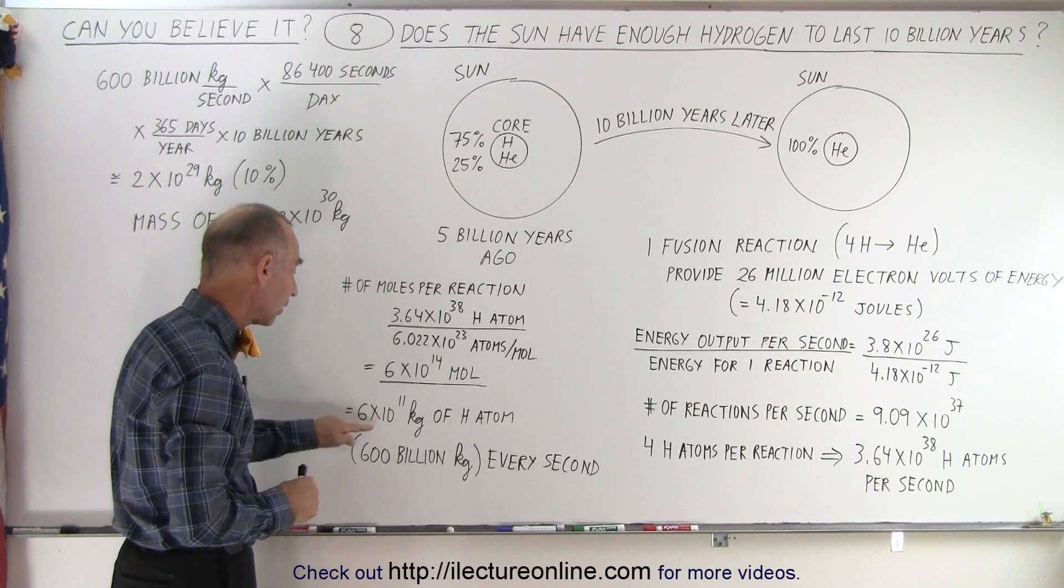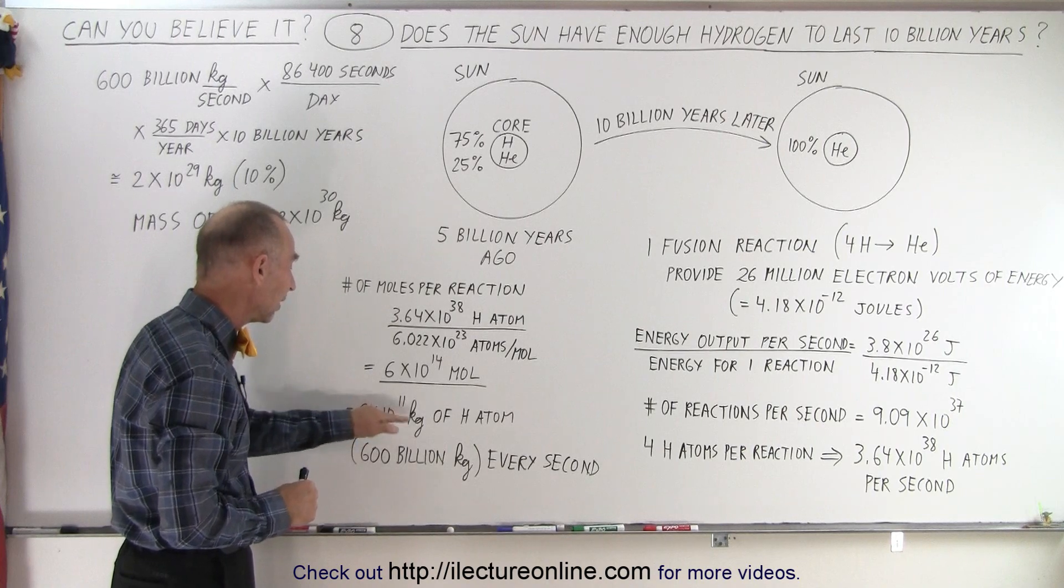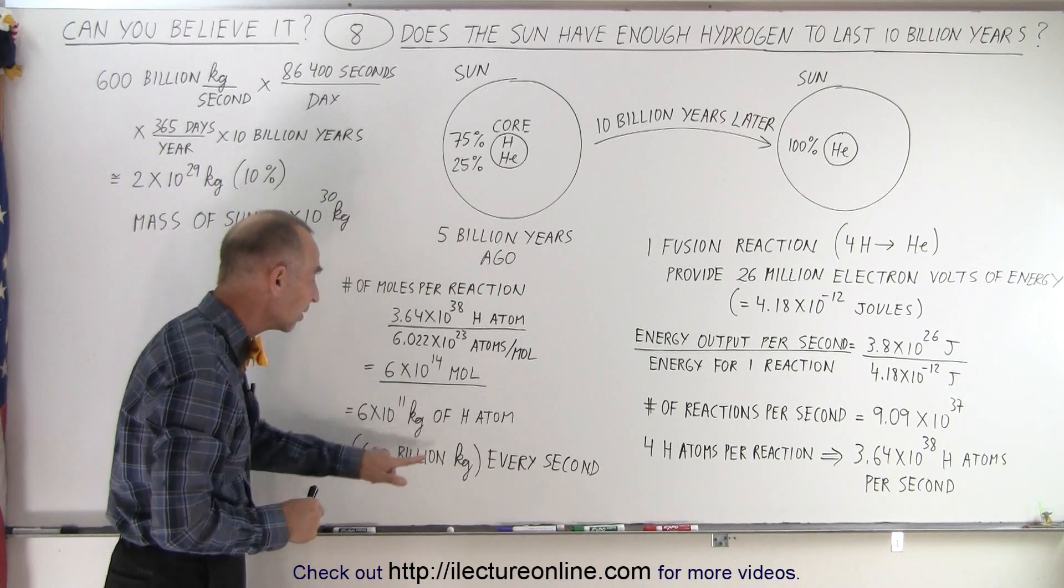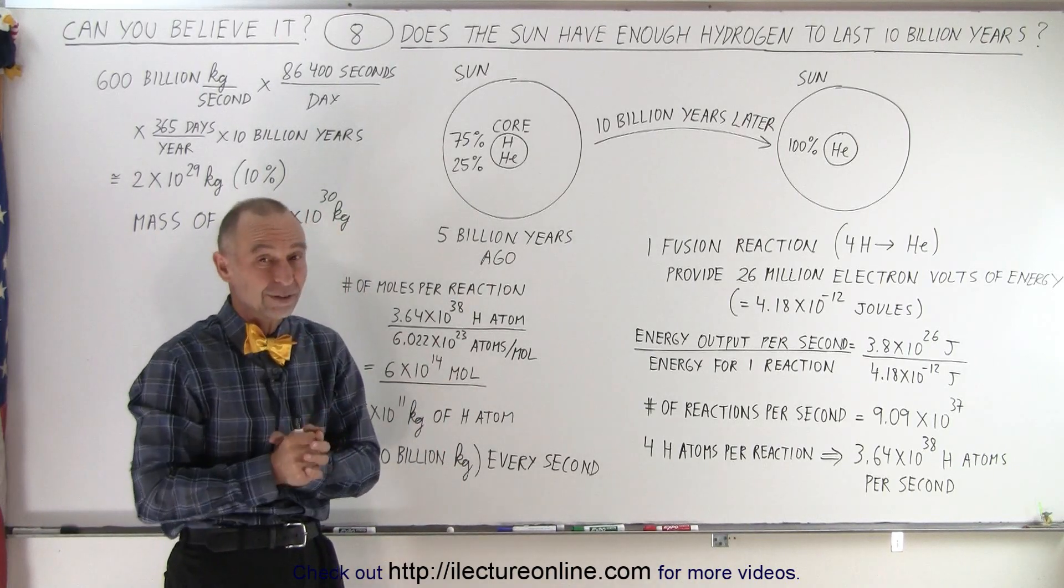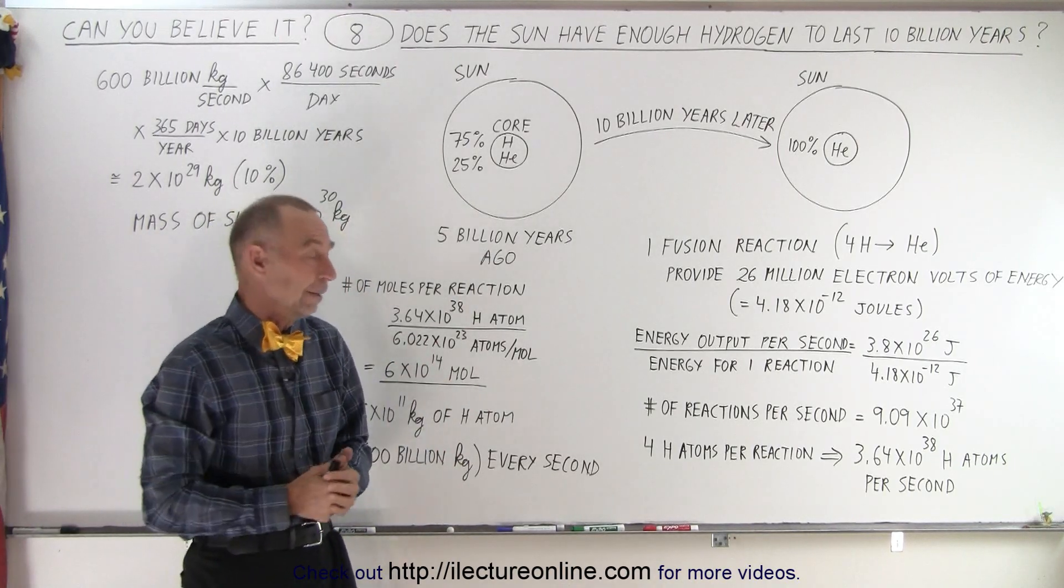When we convert that into kilograms, that's 6 times 10 to 11 kilograms, or 600 billion kilograms of hydrogen are converted into helium every single second. Does the Sun have enough hydrogen to do that?